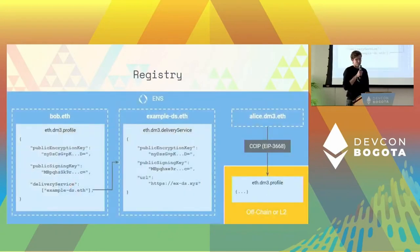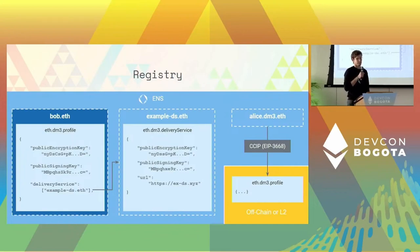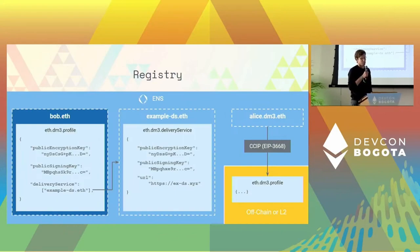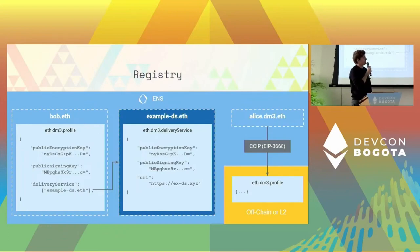Since the registry is the core of the protocol, I'll now explain a little bit deeper how it works. As you can see, we have the public encryption key in the text record for the profile and also the public signing key. Also important is the delivery service name — there must be at least one name of a delivery service. The delivery service text record also contains public keys and a URL pointing to the delivery service instance where messages can be sent to.